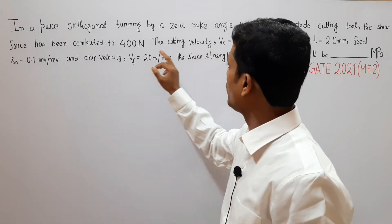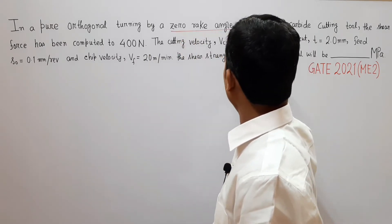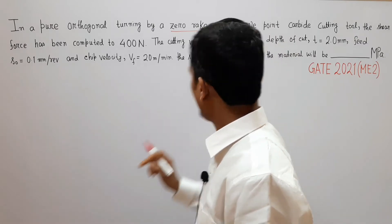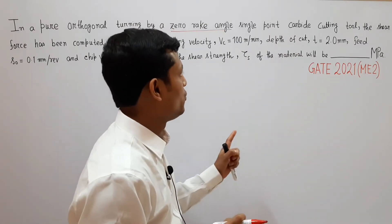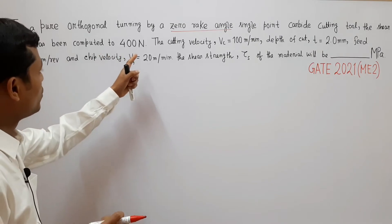In a pure orthogonal turning by a zero rake angle single point carbide cutting tool, the shear force has been computed to 400 Newton.